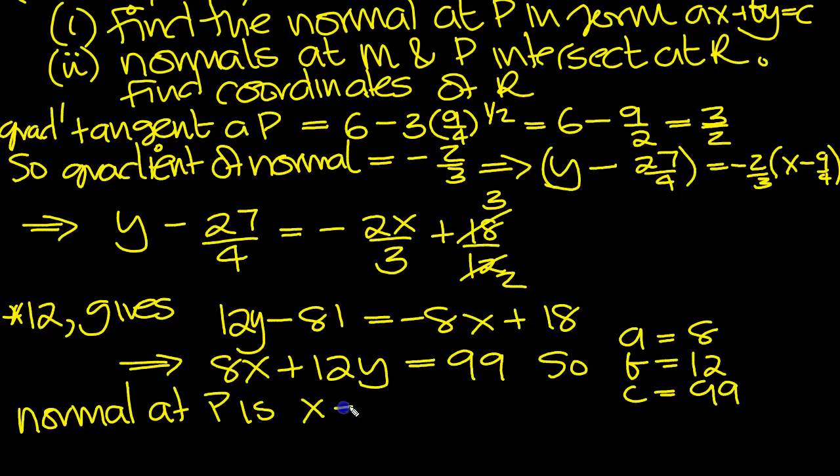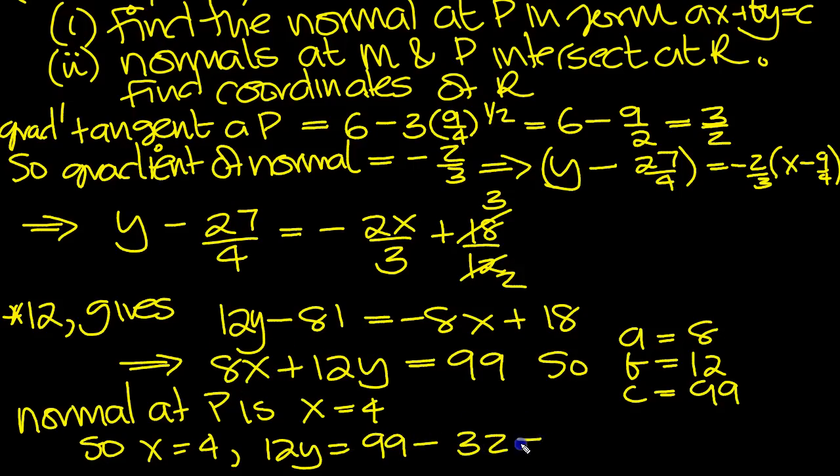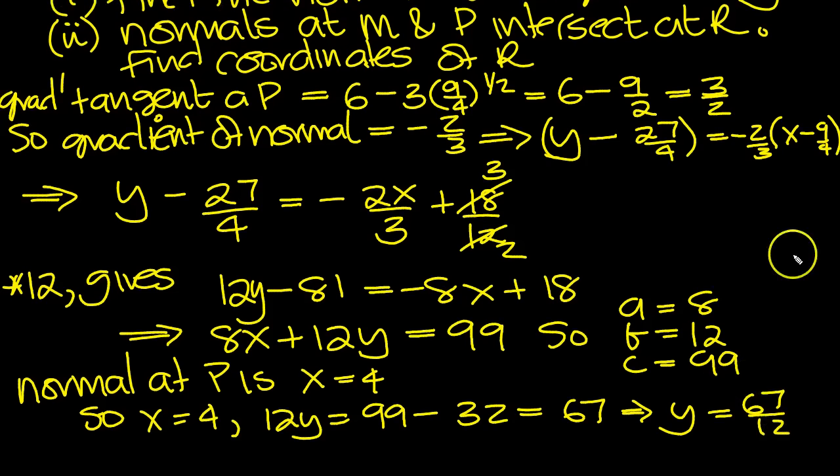The normal at M is x equals 4, so x equals 4 gives 12y is equal to 99 minus, 8 times 4 is 32, so minus 32, that's 67, that gives y equals 67 over 12. So R has the coordinates 4 and 67 over 12.